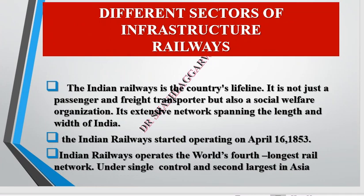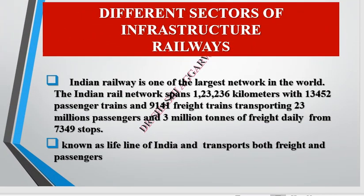Indian Railways is the country's lifeline, transporting passengers and freight from one place to another and also functioning as a social welfare organization. Indian Railways started operations on 16th April 1853. It is the world's fourth longest railway network under single management and the second largest in Asia. The network spans approximately 1,23,236 km, with 13,452 passenger trains and 9,141 freight trains, serving 23 million passengers and 3 million tons of freight daily across 7,349 stops.